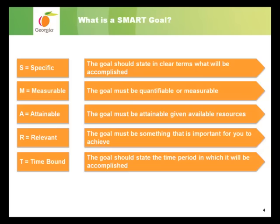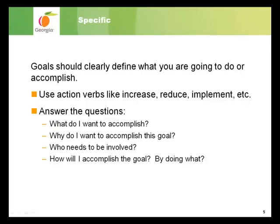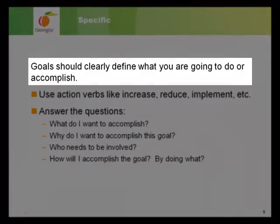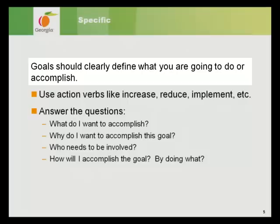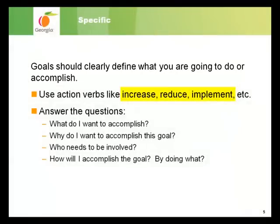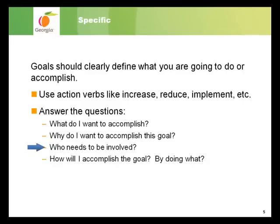Let's spend a few minutes looking at each of these criteria in more detail. Goals should clearly define what you are going to do or accomplish. This is most easily achieved by using action verbs like increase, reduce, implement, create, coordinate, etc. When trying to make your goal specific, ask yourself: What do I want to accomplish? Why do I want to accomplish this goal? Who needs to be involved? And how will I accomplish the goal — by doing what?